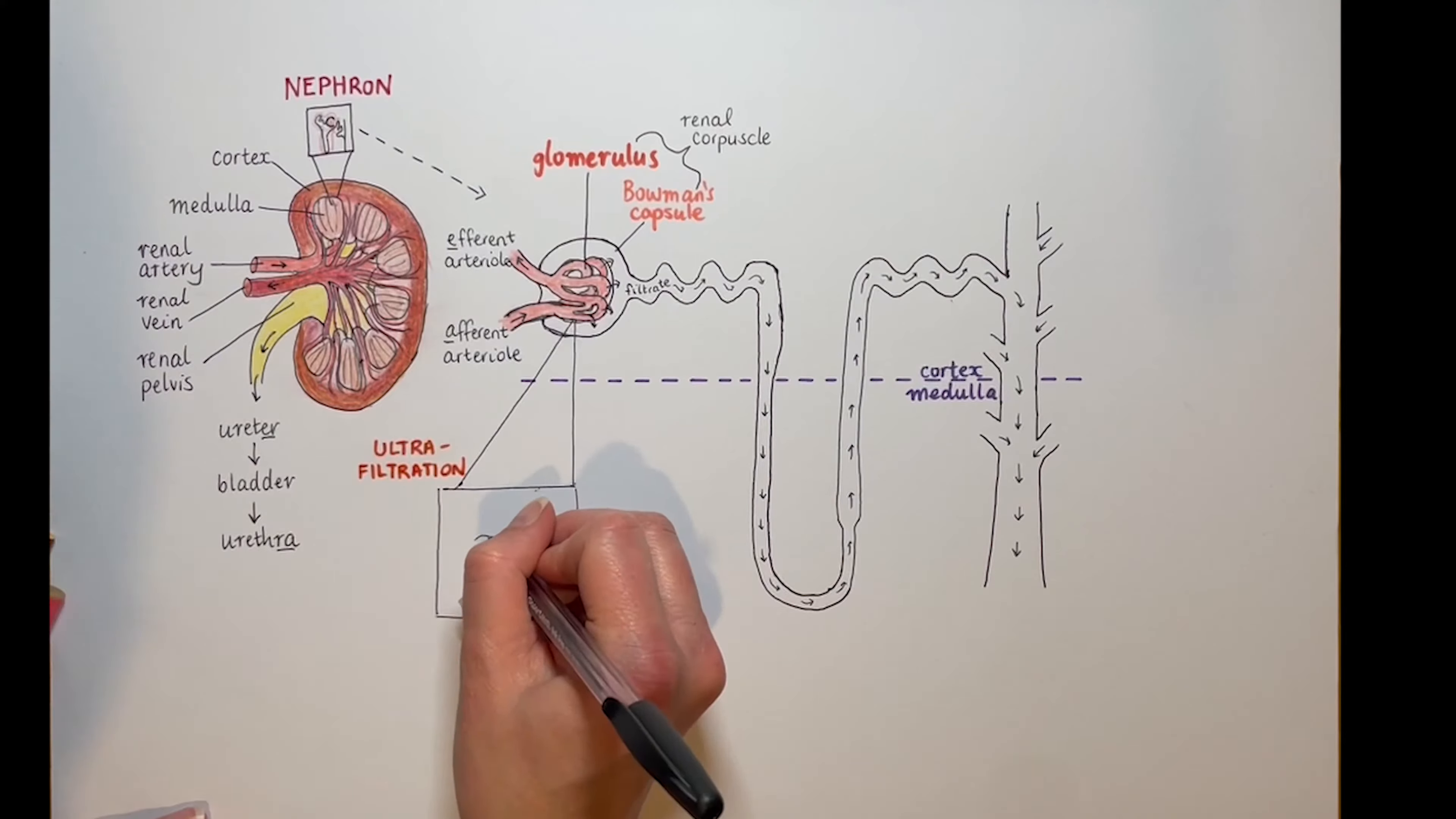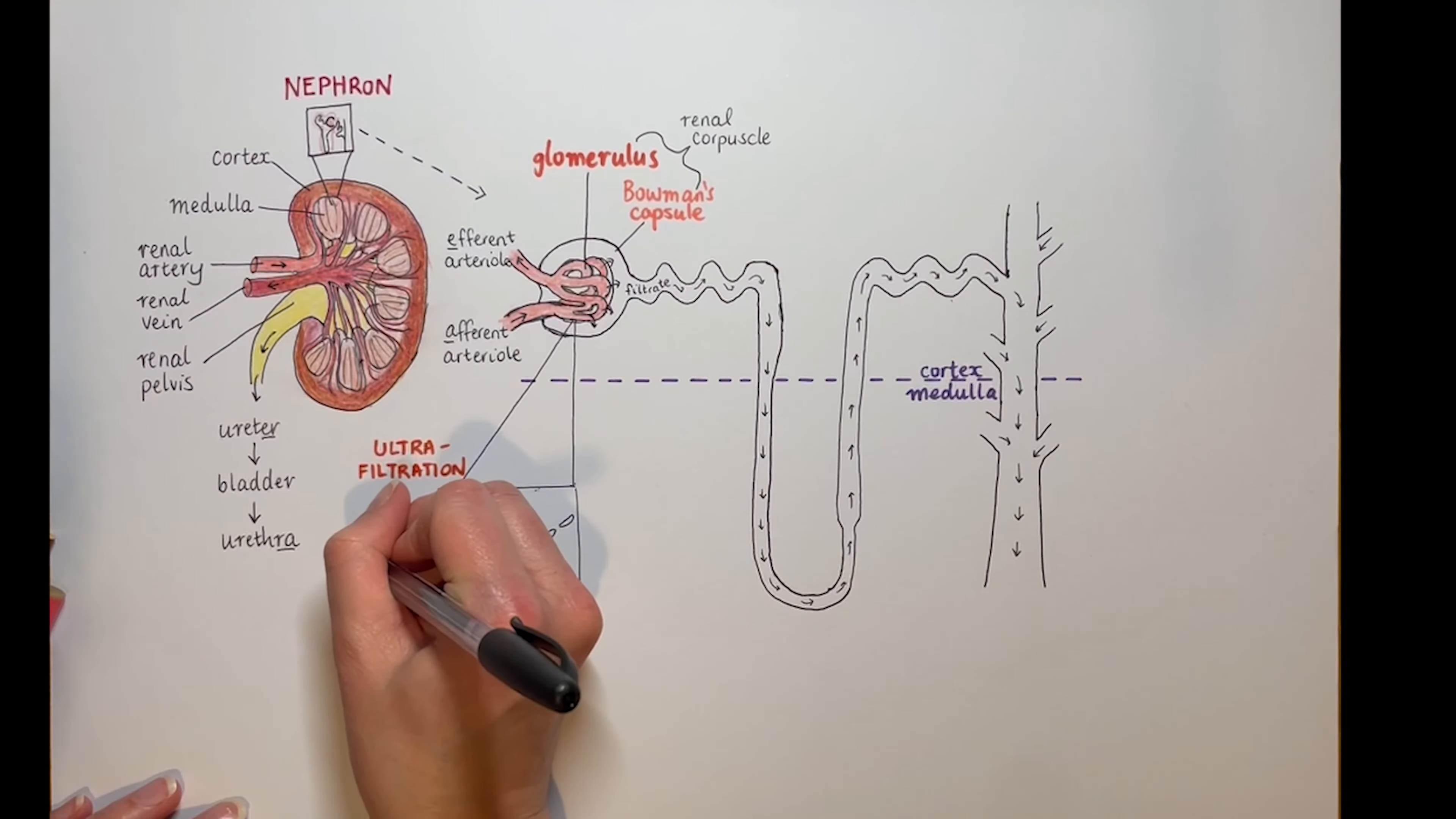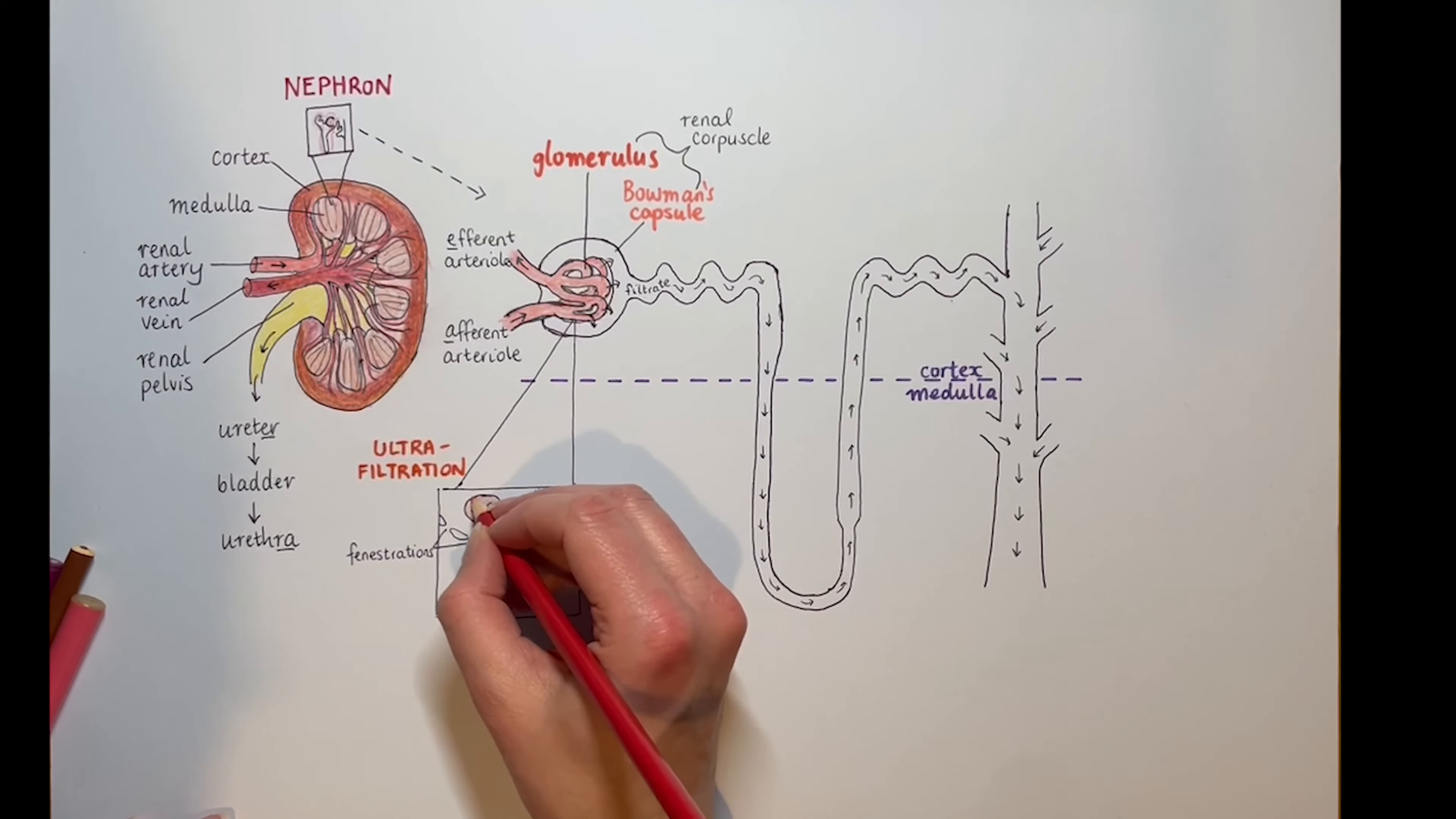To make them more porous than most other capillaries in the body, the glomerular capillaries are fenestrated. Back to our Latin: fenestra is the word for window, and these capillary walls have little holes in them, making them extra leaky. But the holes are too small for red blood cells to get through.